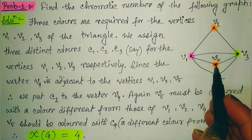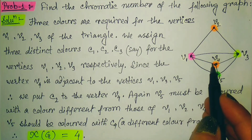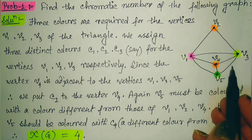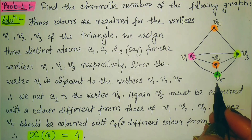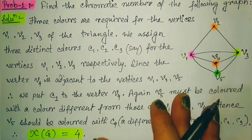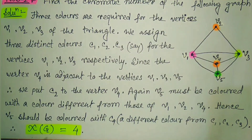One more vertex remains. This vertex v5 is adjacent to v1, v3, and v4 — all three. So none of the three existing colors can be assigned to v5, and we require one more color. Therefore a fourth color is needed, so the chromatic number of this graph is 4. This is the straightforward trial and error method.